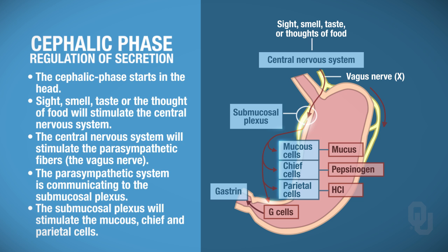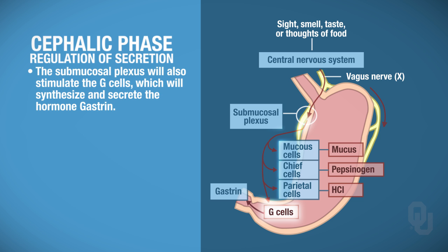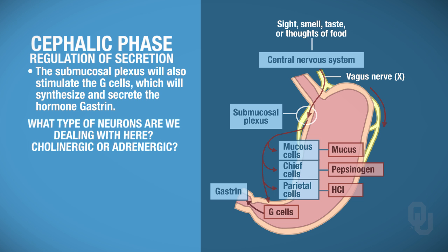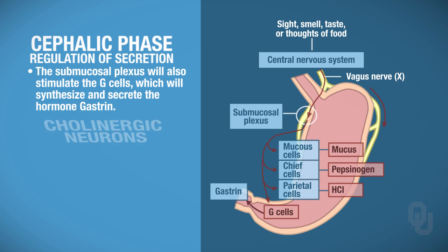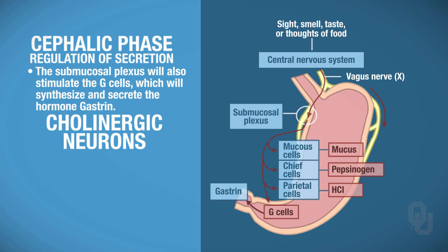The submucosal plexus also stimulates the G cells in the gut. The G cells will then synthesize and secrete gastrin, which is your hormone. Gastrin is synthesized and secreted by the stomach, and it's the submucosal plexus that's responsible for this. Now, the submucosal plexus contains adrenergic and cholinergic neurons—what type are we dealing with here? These should be cholinergic neurons, because we're stimulating digestion.